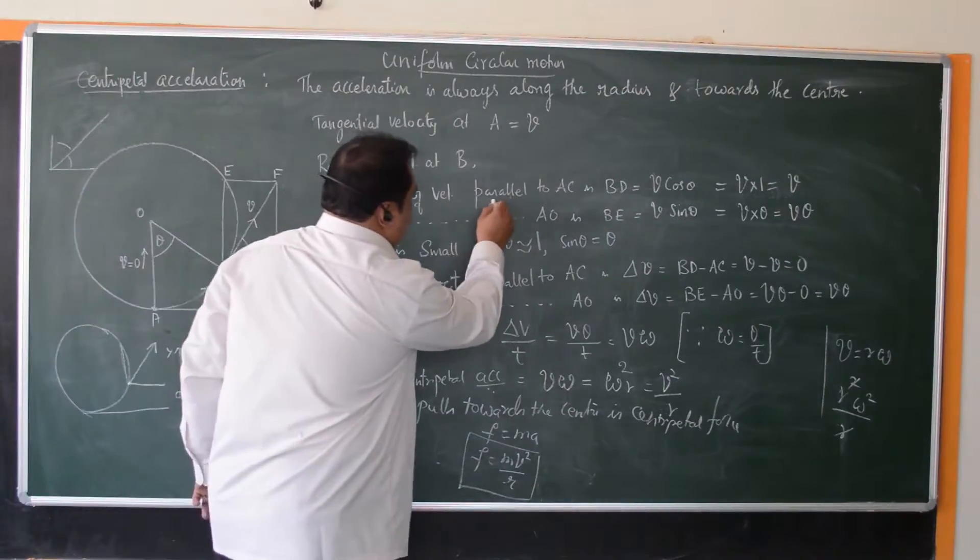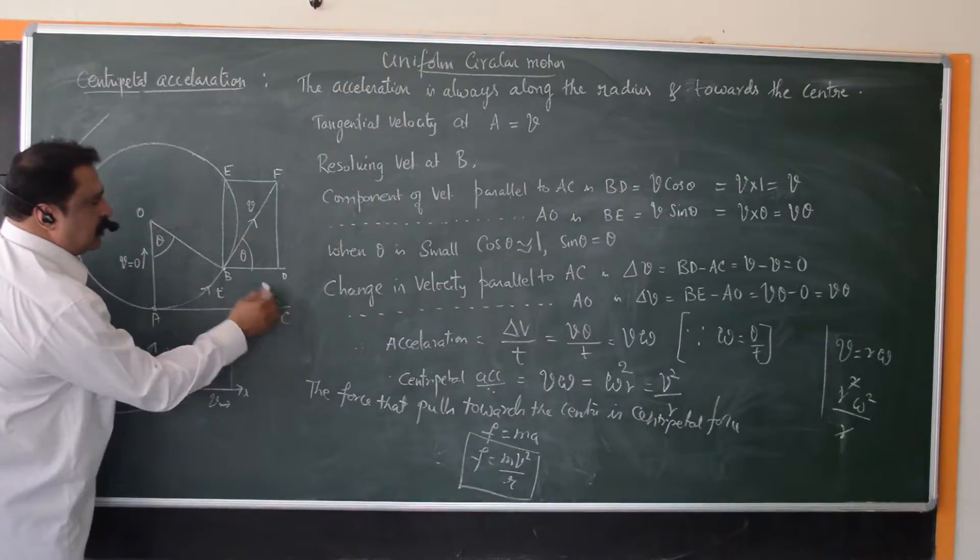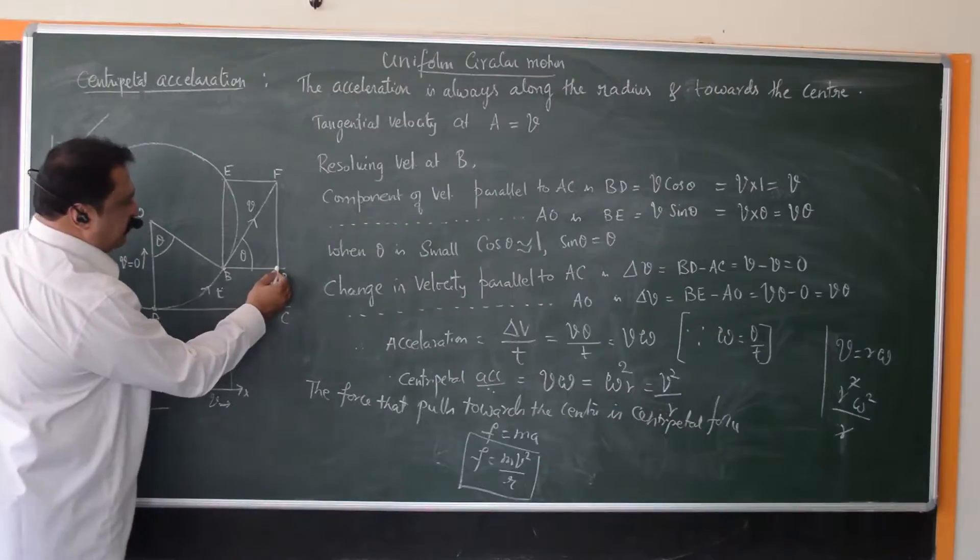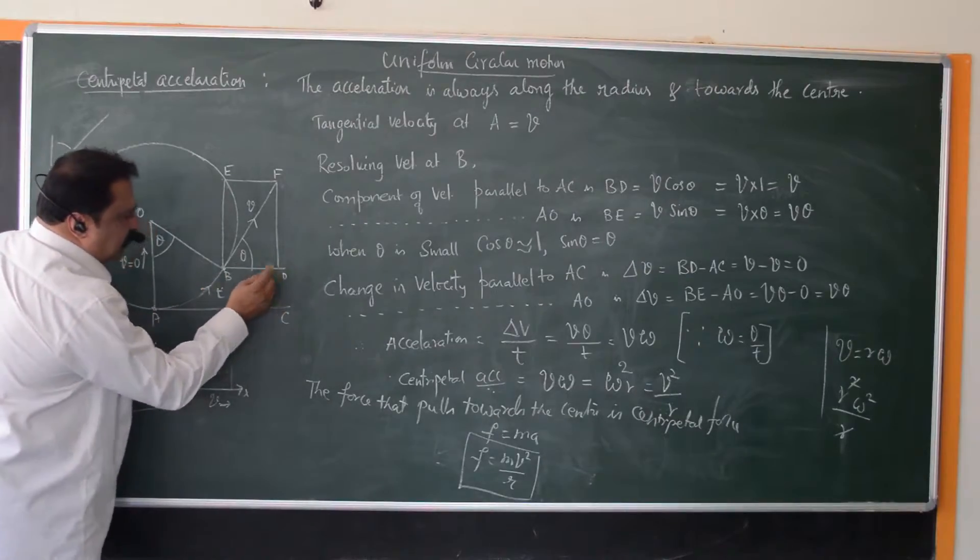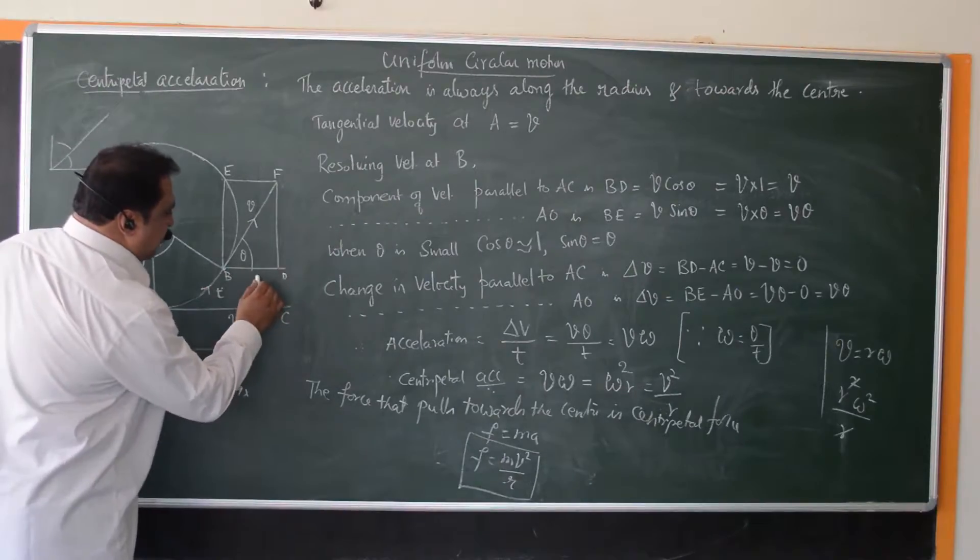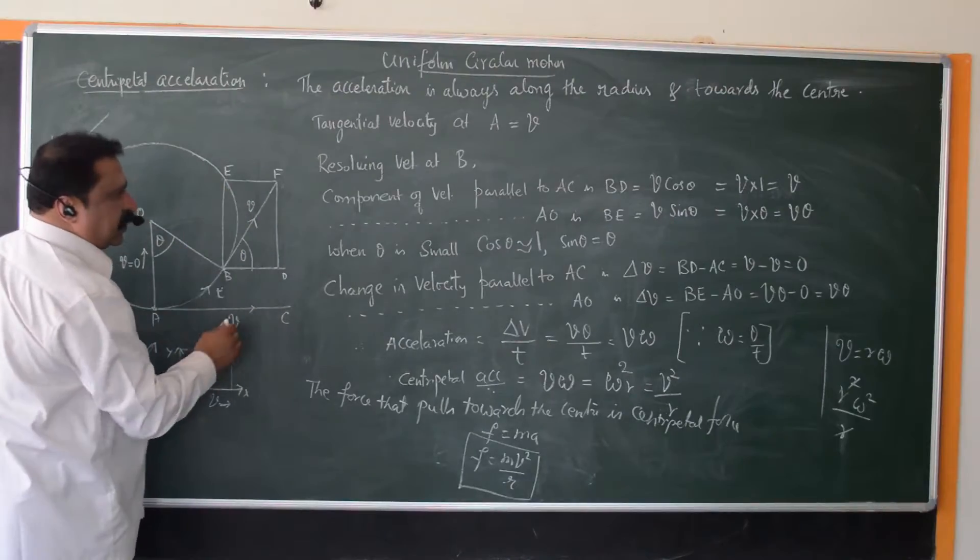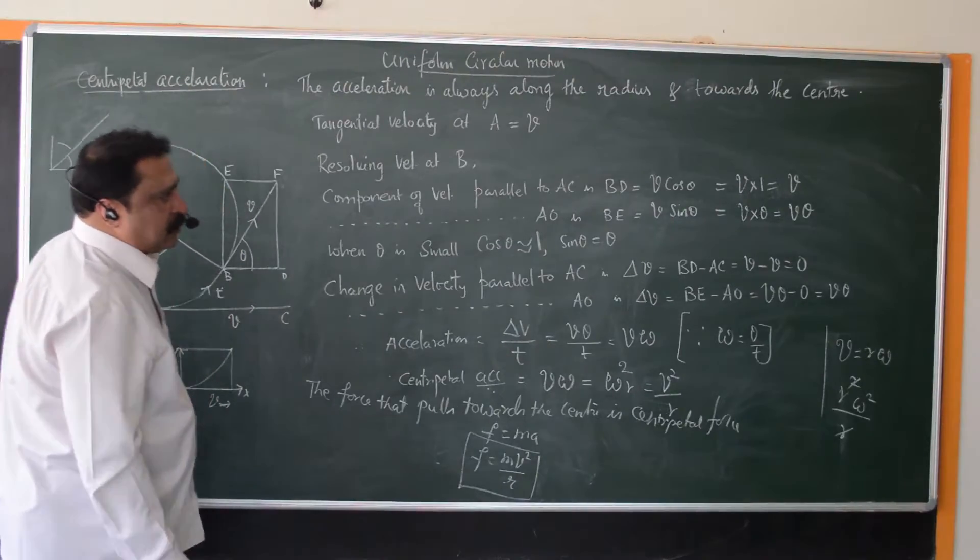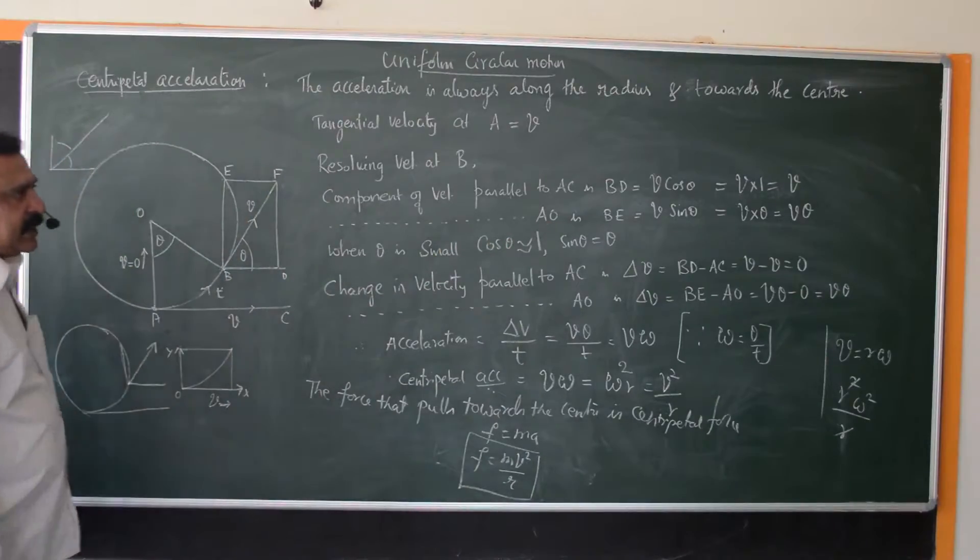What is the component of velocity horizontally? That is parallel to AC. The velocity is distributed horizontally with the magnitude BD, and BD is V cos theta. Horizontal component is cos theta and vertical component is sin theta. So BD equals V cos theta and vertical component BE equals V sin theta.